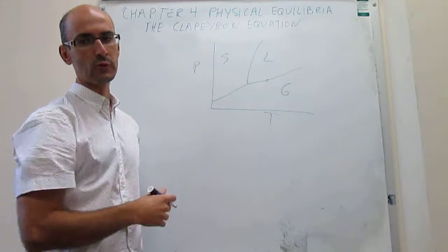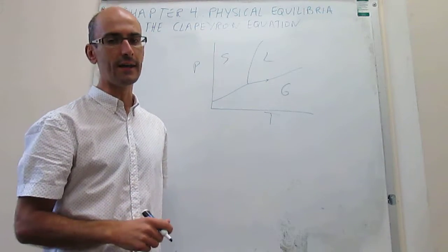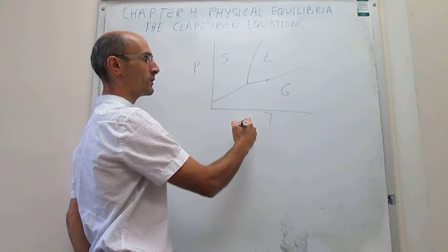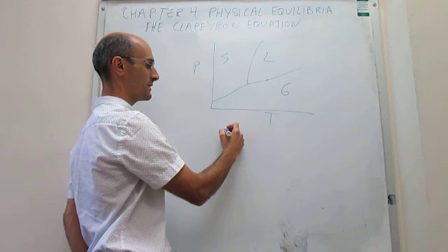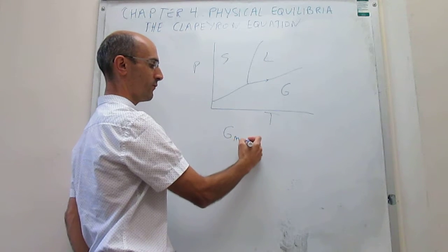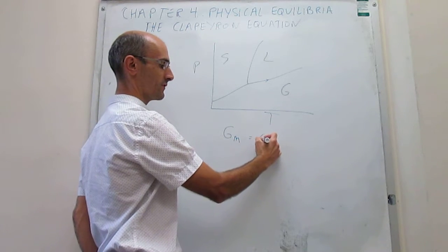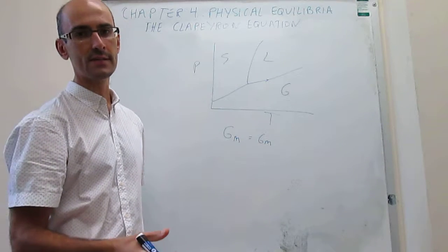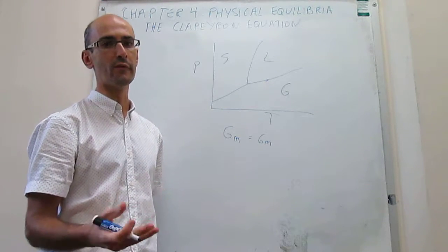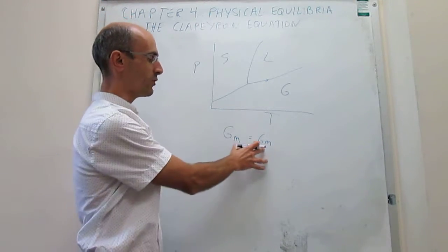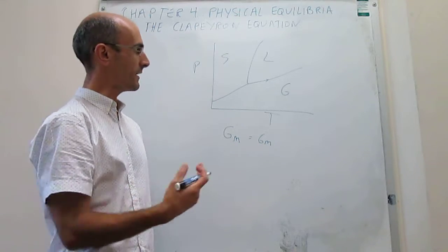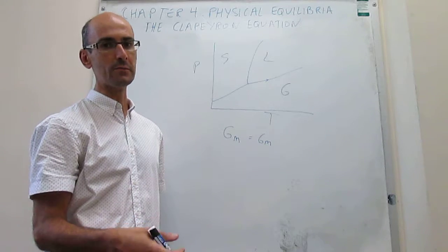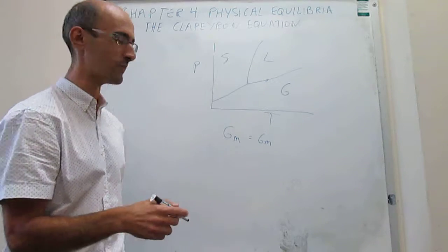I'm using the liquid-gas phase boundary, but it could be any of the three phase boundaries. Something important there is that you have an equilibrium. What happens here is that the molar Gibbs energy of one of the phases is identical to the molar Gibbs energy of the other phase. No phase is more stable than the other one — both of them are equally stable — and that means that the molar Gibbs energy is identical. I'm going to be referring to the liquid-gas phase boundary, but this could be done for any of the phase boundaries.